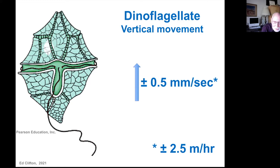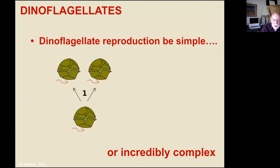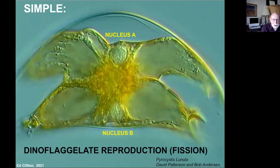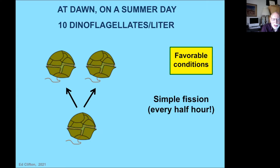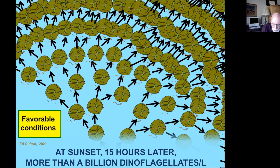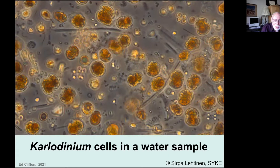Dinoflagellate reproduction can be simple or incredibly complex. Simple is just fission — cloning, essentially — and under favorable conditions they can do this every half hour. Which means if at dawn on a summer day you had 10 dinoflagellates in a liter of water, and came back at sunset 15 hours later, if they all survived and replicated, there would be more than a billion in that liter. They can form really dense concentrations — 20 million cells per liter during a bloom.